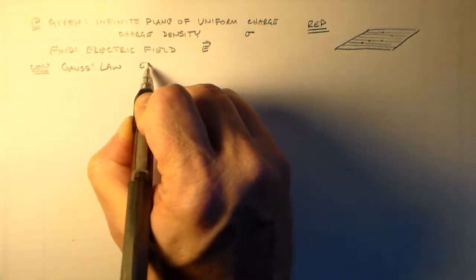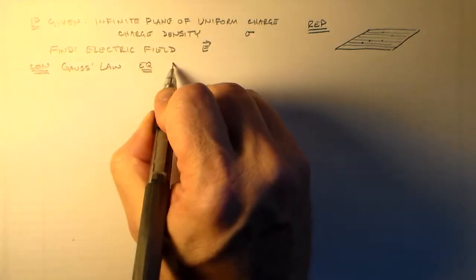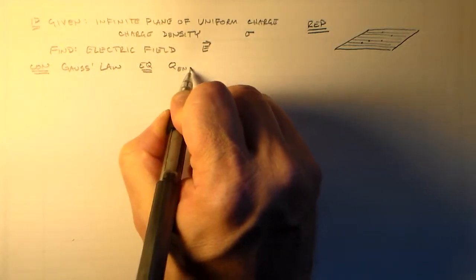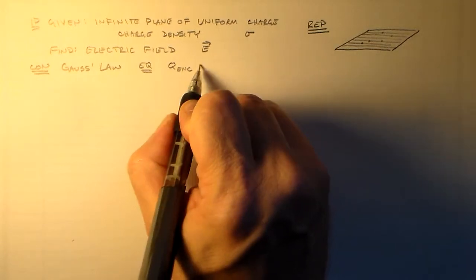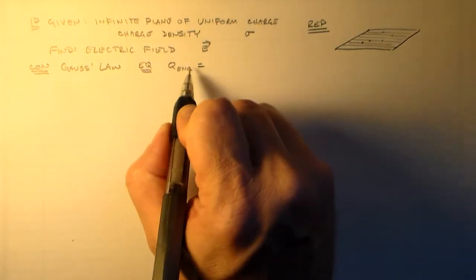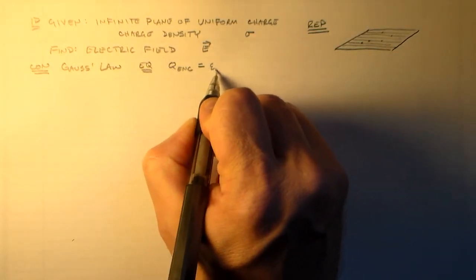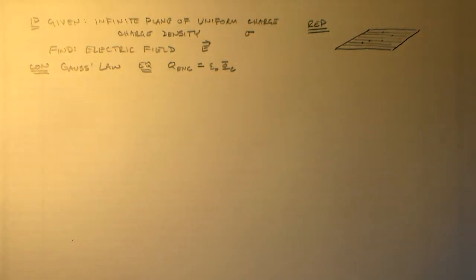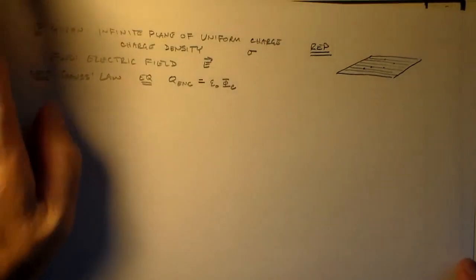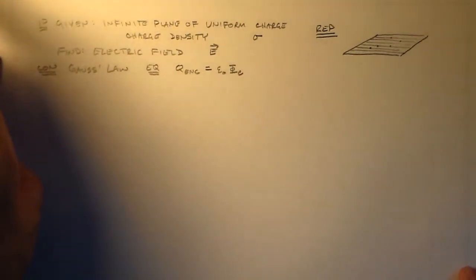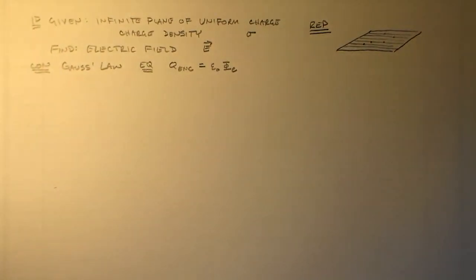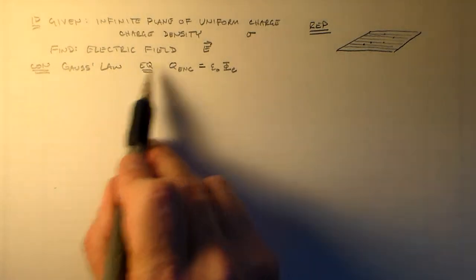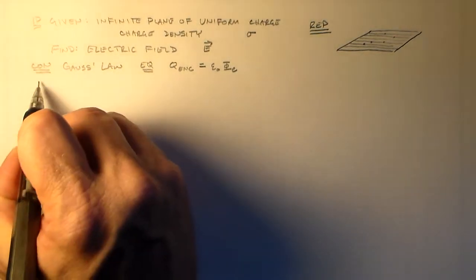And Gauss's Law I like to use in this compact form: the total charge enclosed in a surface is equal to the amount of flux through the surface times the permittivity of free space times a constant. Okay, so that's basically what we're going to do.